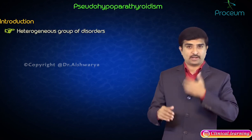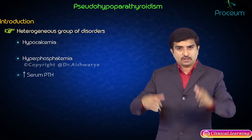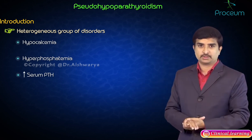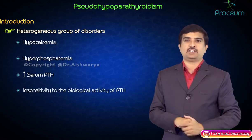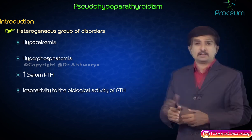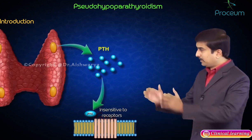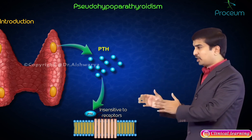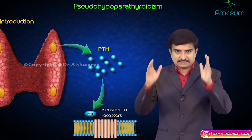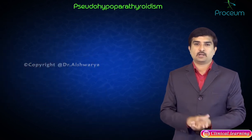Pseudo hypoparathyroidism is a heterogeneous group of disorders characterized by hypocalcemia, hyperphosphatemia, and increased serum concentration of parathyroid hormone — which is extremely important to know — and insensitivity to the biological activity of PTH. This means the PTH level is normal or elevated, but whatever PTH is secreted by the parathyroid gland is insensitive at the receptors where it acts.